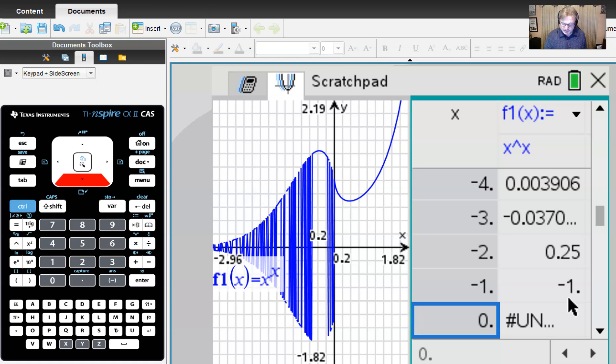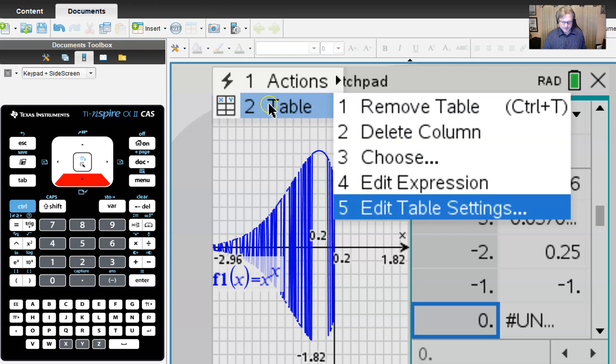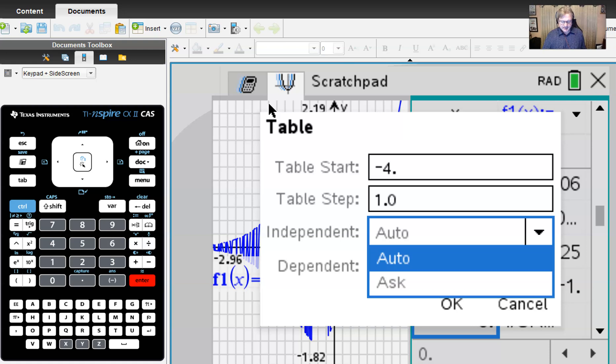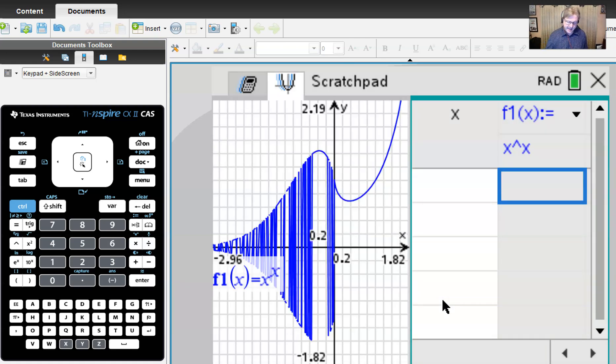So what we're going to do is I'm going to change this table settings and I want to see if I can tell the table to let us input the independent variable, let us place the x value in. I'm going to change that to Ask and then I'm going to type in some things like negative one. Well, that doesn't seem to be a problem. It knows that negative one raised to the negative one power is negative one, not a problem.